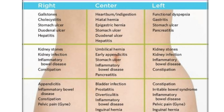Let's see the conditions associated with abdominal pain. In the right hypochondriac region, pain is due to gallstones, cholecystitis, stomach ulcer, duodenal ulcer, and hepatitis. In the right lumbar region, pain is due to kidney stones, kidney infection, inflammatory bowel disease, and constipation.